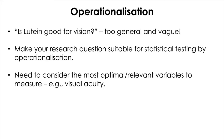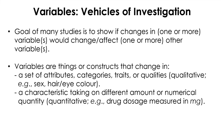In doing so, we need to consider the most optimal or relevant variables to measure to answer the research question. For example, visual acuity can be one aspect of vision. Then we can say that having better visual acuity can be a good thing for vision or vice versa. Variables are basically the things or constructs that change in either a set of attributes, categories, traits, or qualities.